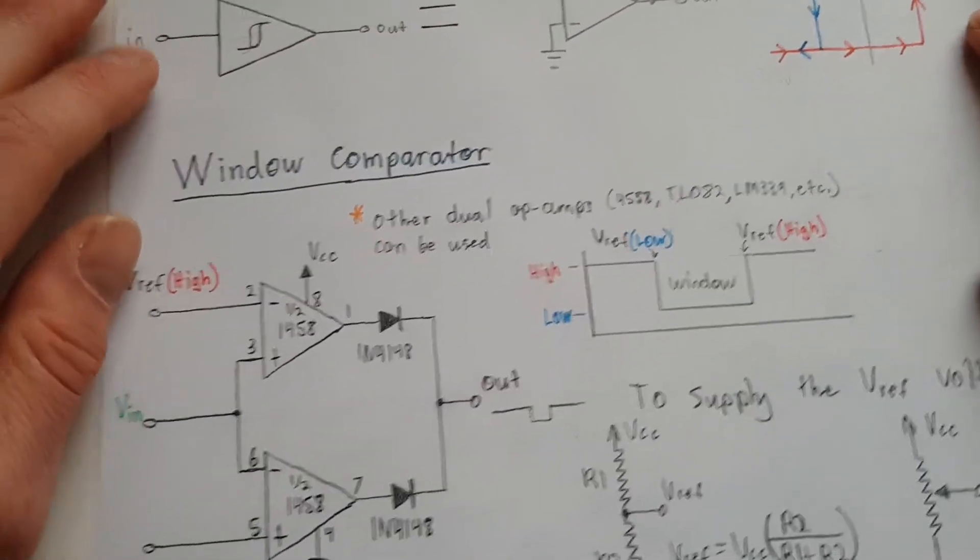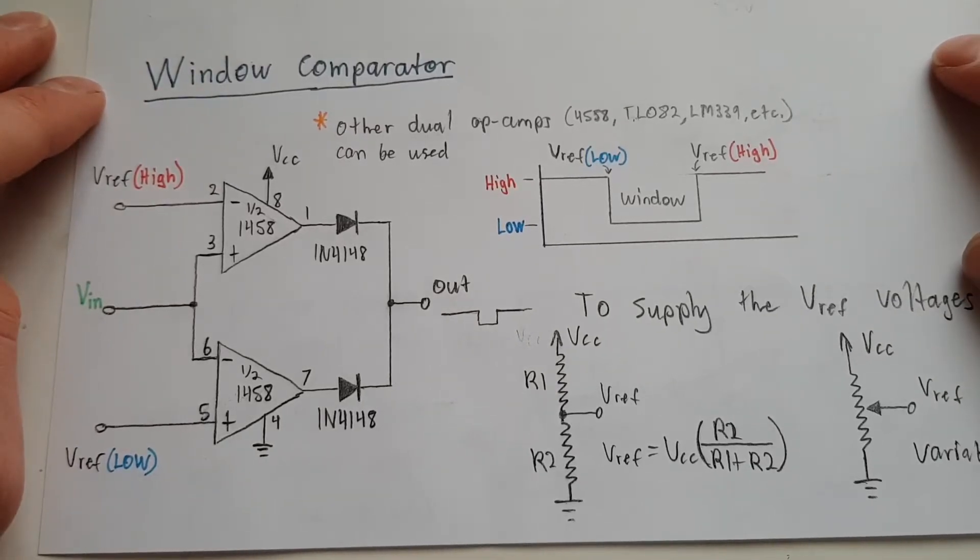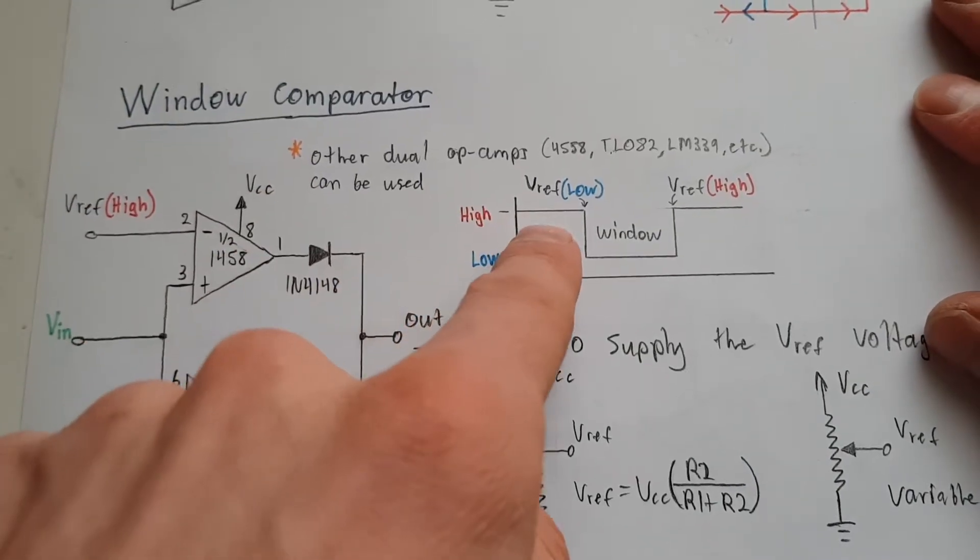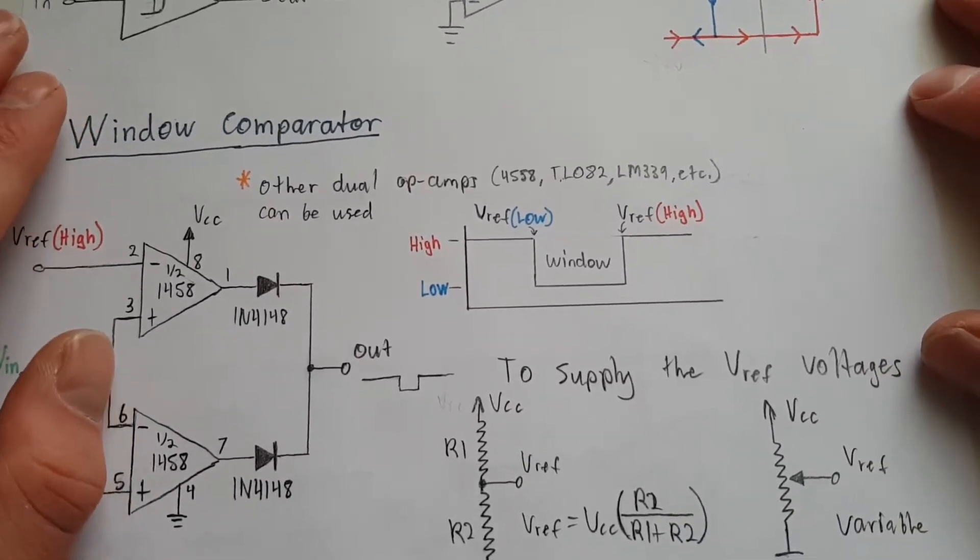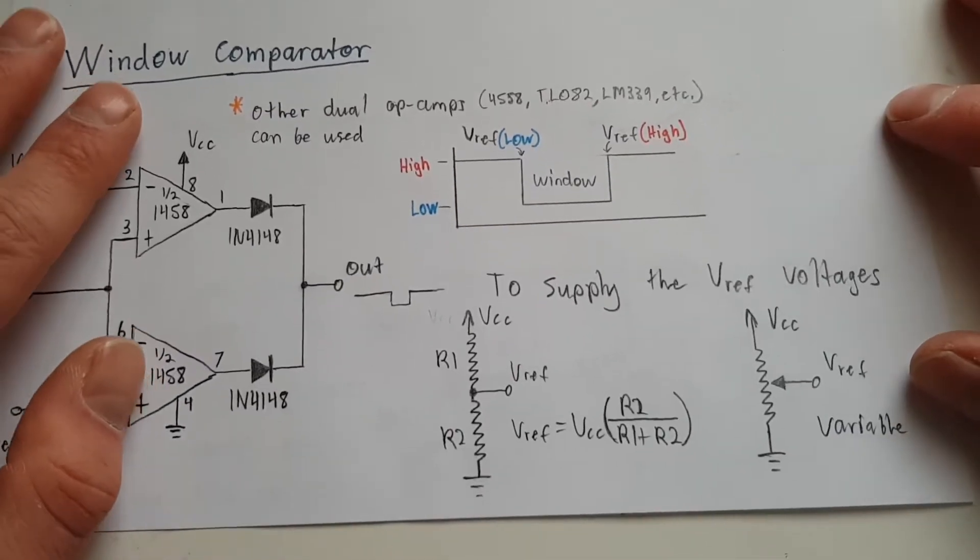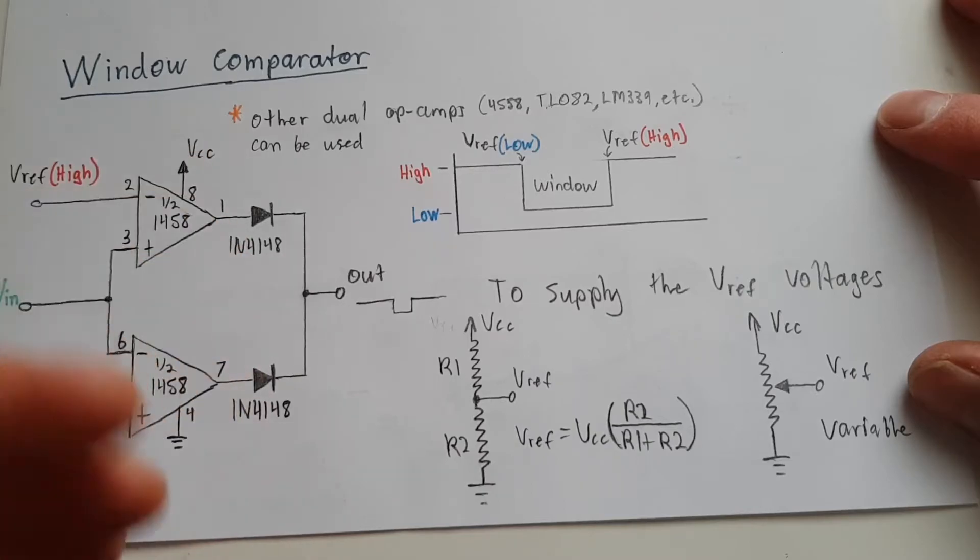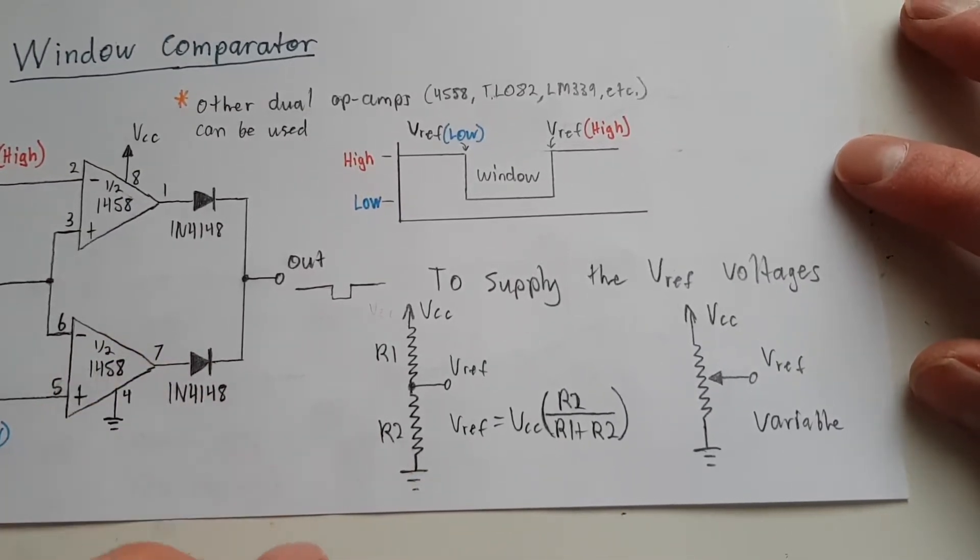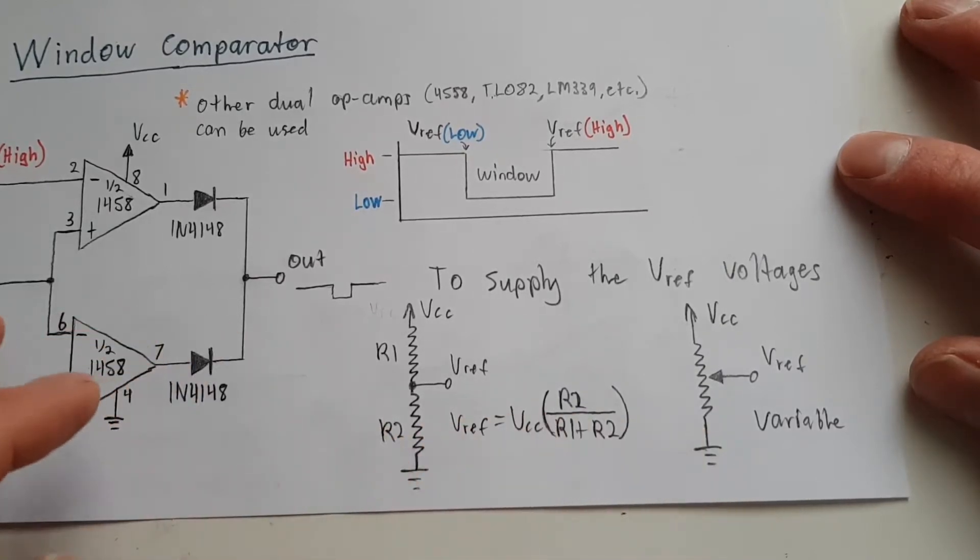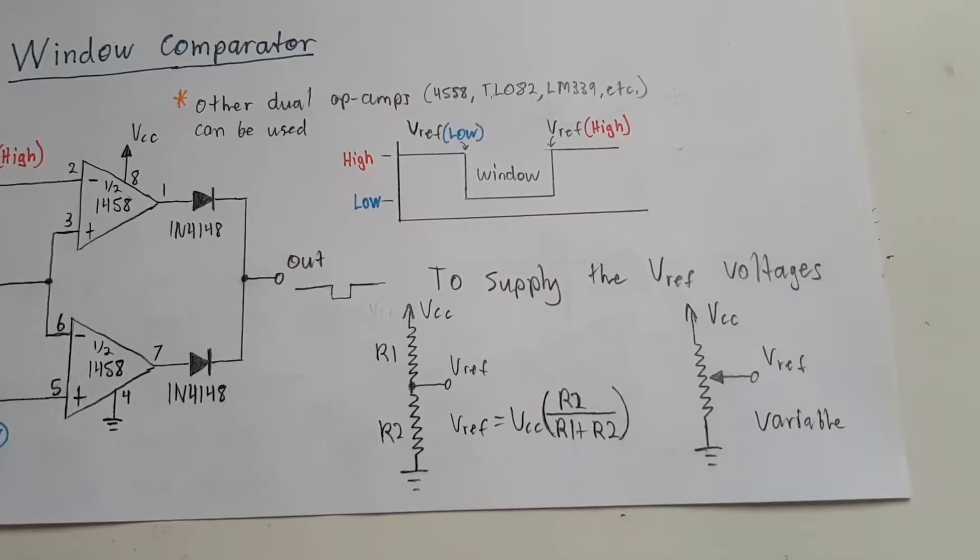Now a window comparator is basically two comparators back to back where they're operating together to create a window where you have two reference voltages, a low and a high, and you can adjust those and set a window. And when the window is met the output will change. And of course you can set the voltage reference by either a potentiometer or a voltage divider, which of course is kind of the same thing.